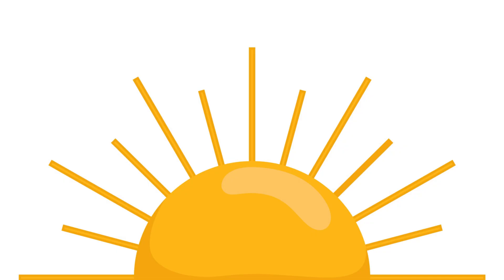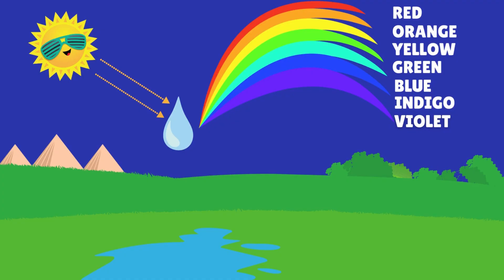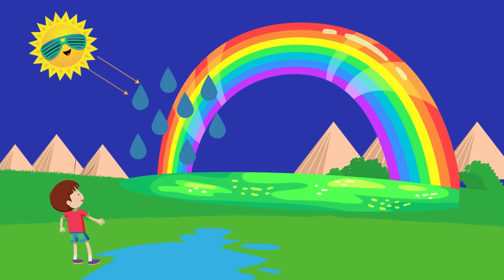Hey friends, do you know the sun's light is white light? And white light is made of seven colors. Now let us see how a rainbow is formed. The raindrops act as tiny prisms and bend the sunlight into a band of seven colors.